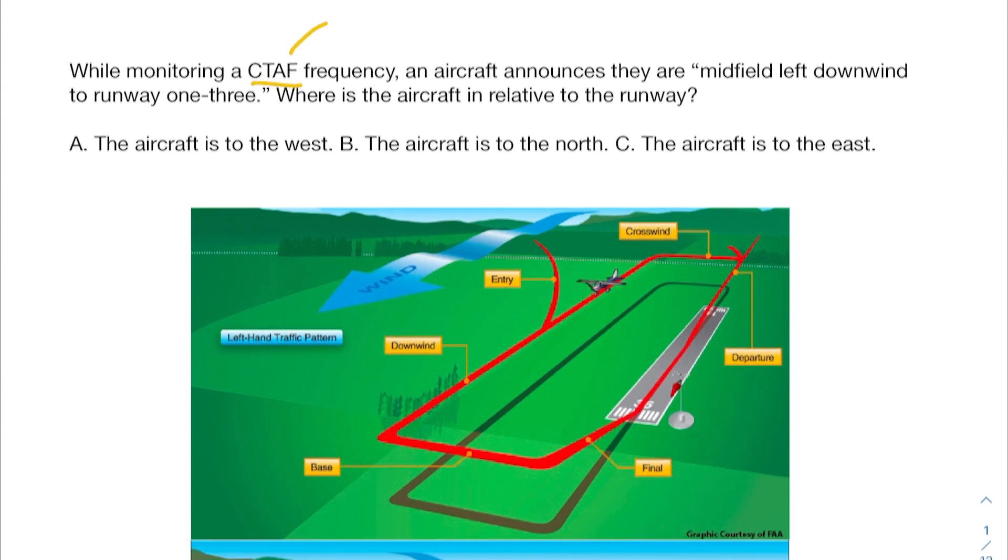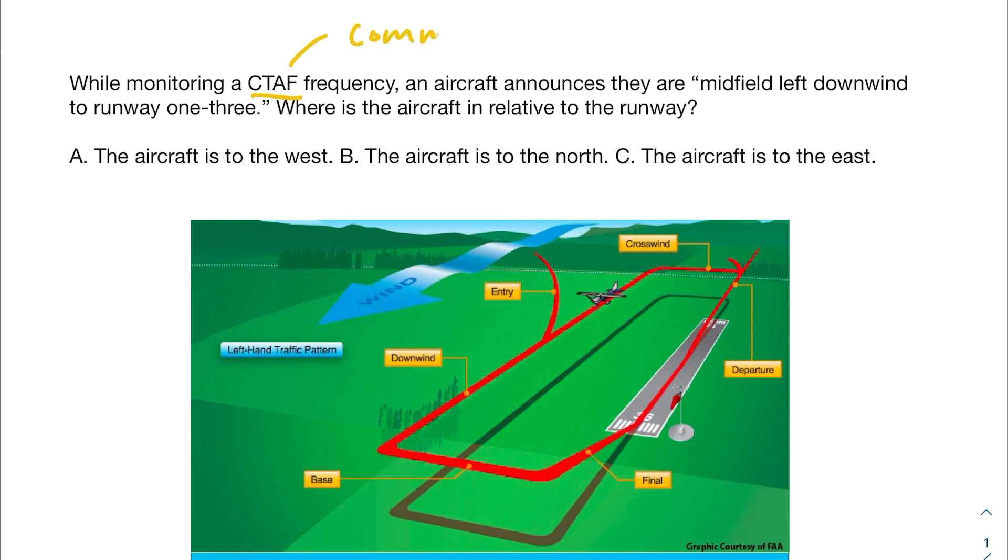In this problem, CTAF, we can go ahead and describe that as the common traffic advisory frequency. This is basically the radio frequency that pilots use when an airport doesn't have a control tower that tells them where to land. So this is plane-to-plane radio communication. And we're going to go into each of the parts of this description to figure out where this aircraft would be relative to a runway.